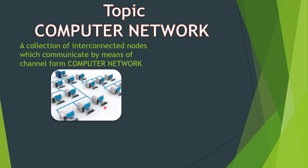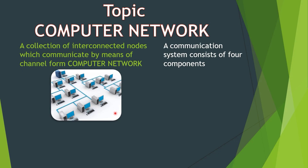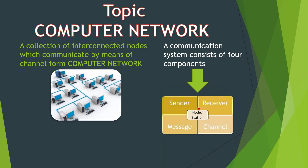As you can see, this is an example of a computer network where several computers are connected and can share resources and communicate. Now let us understand the four components of a communication system: sender, receiver, message, and channel. The sender is the node that sends data; the receiver is the node that receives it; the message is the data itself; and the channel is the path through which the message travels.